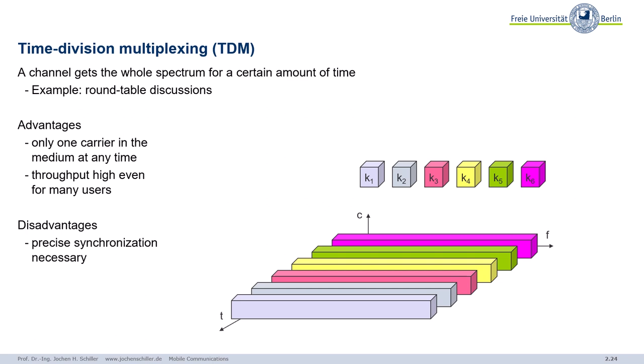In TDM, a sender gets the whole spectrum for a certain amount of time. Like in a moderated discussion — the moderator signals you to speak, you use the whole spectrum for two or three minutes, then the next person speaks. Only one sender uses the medium at any time. A big advantage is that even for many users you can achieve high throughput. However, you need precise synchronization — receivers hundreds of kilometers apart must know which data is addressed to them, either via time synchronization or via addresses in data packets.